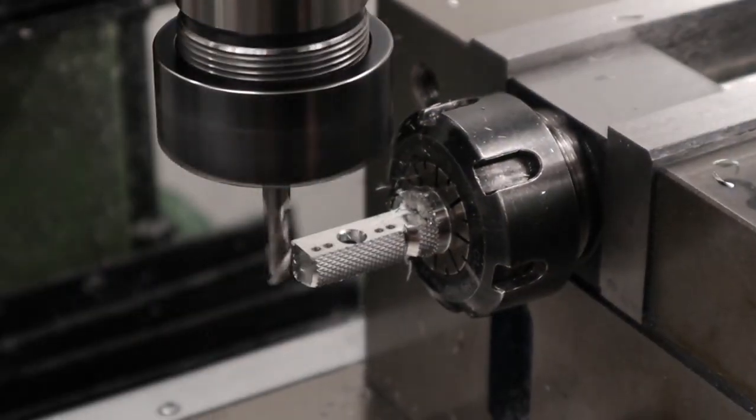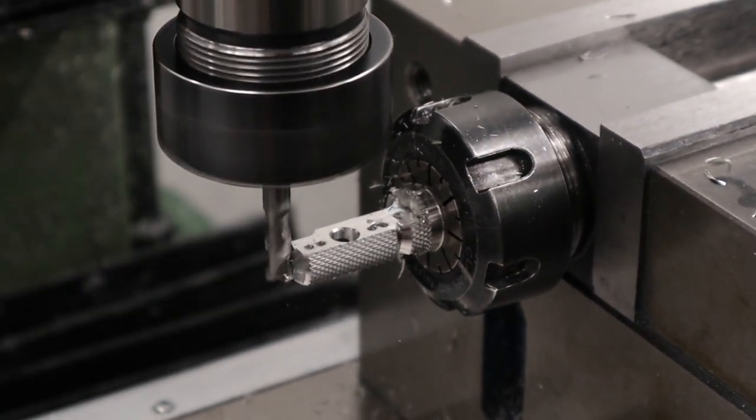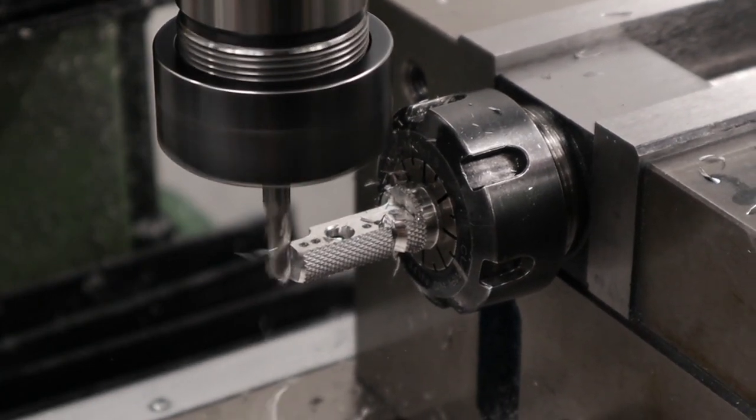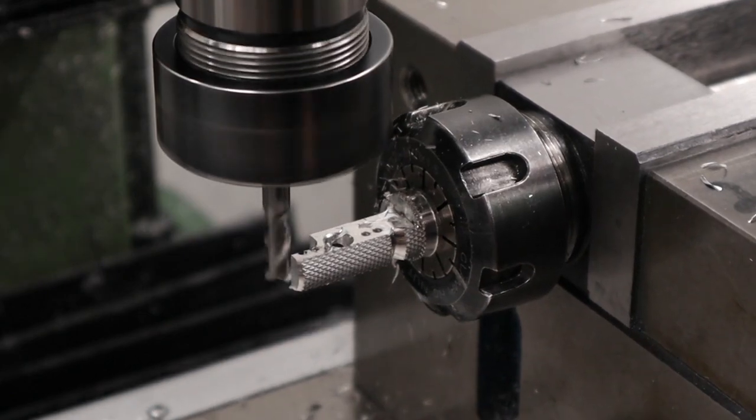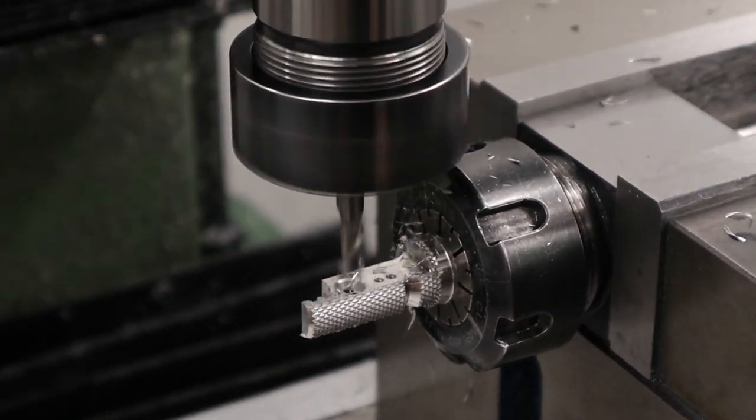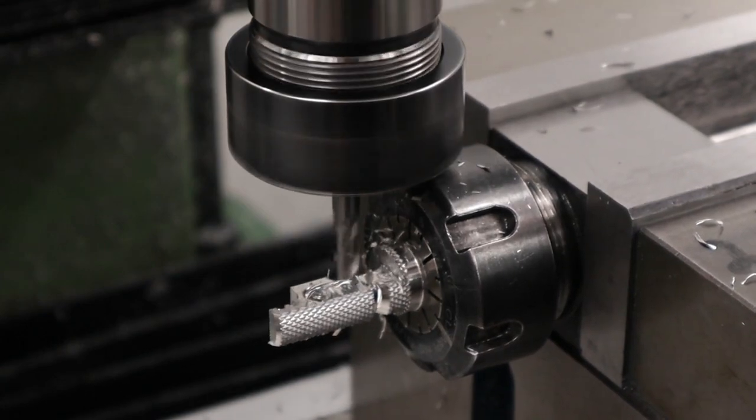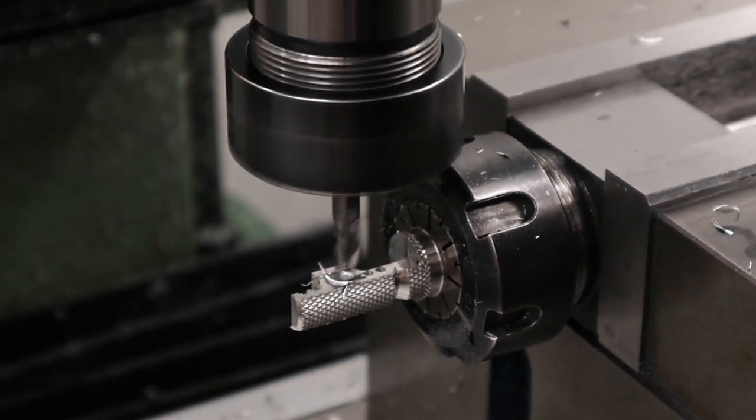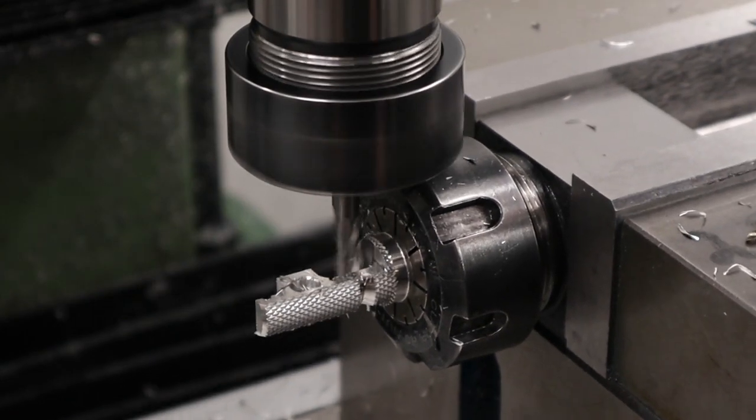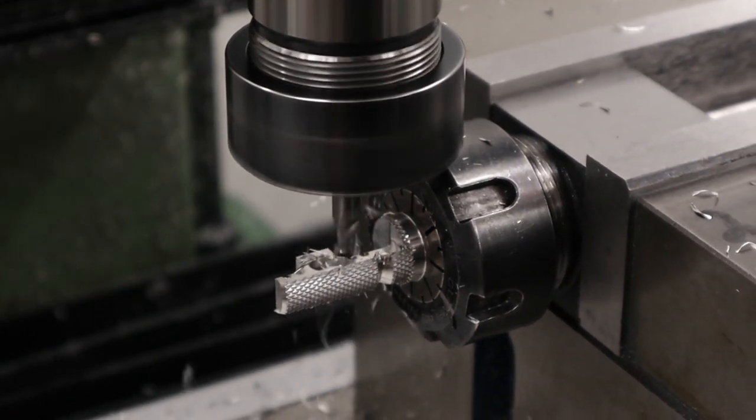Next thing we can do is mill out some of the waste material from the ears of the trigger. This will allow the trigger to slide up and down the pole without hitting any of the larger features on the trigger pole. Again just using our 6mm end mill to mill out the waste material. In the process of this we do expose the backs of the mystery holes and this will hopefully give you a little hint as to the use of these holes.